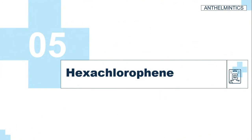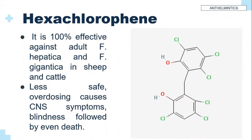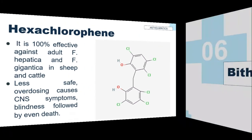Hexachlorophene is used in treatment of mature liver fluke infections in humans and ruminants, and cestoid infections in canines. It is 100% effective against adult Fasciola hepatica and adult Fasciola gigantica in sheep and cattle. This is because the drug remains in free form in bile, and the host metabolite excreted in bile has high activity, especially against adult flukes as they remain in bile ducts. However, immature flukes in the liver parenchyma and blood are less affected because the free drug is less available due to plasma protein binding. Hexachlorophene is less safe — overdosing causes CNS symptoms, blindness, and even death.